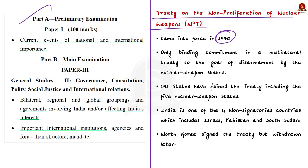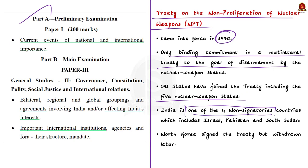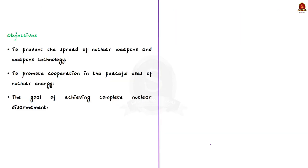The NPT corresponds to the Treaty on the Non-Proliferation of Nuclear Weapons, which came into force in 1970. It is the only binding multilateral commitment to disarmament by nuclear weapon states. As of now, 191 states have joined the treaty including the five nuclear weapon states. India is one of four non-signatory countries, along with Israel, Pakistan, and South Sudan. Note that North Korea signed but later withdrew.